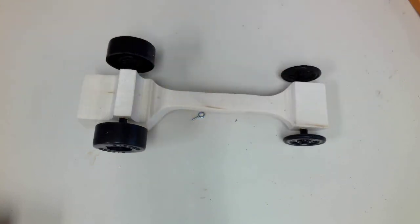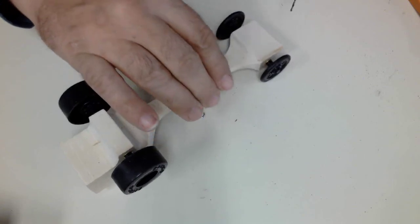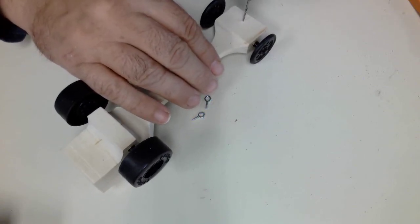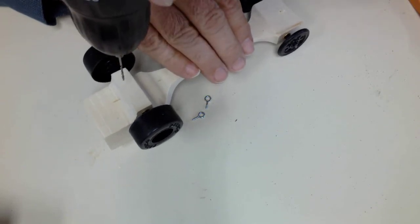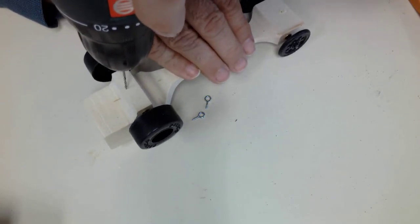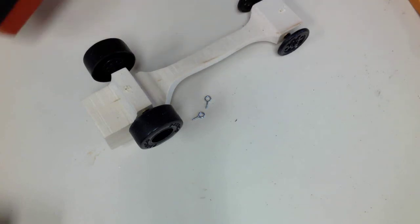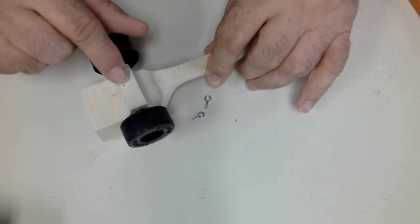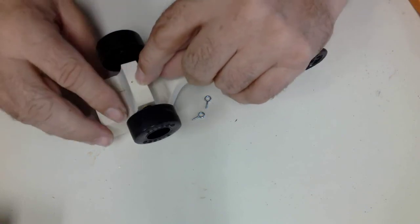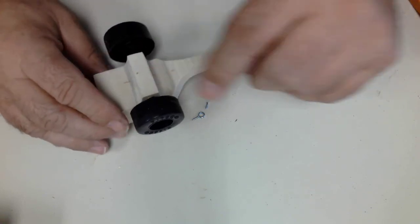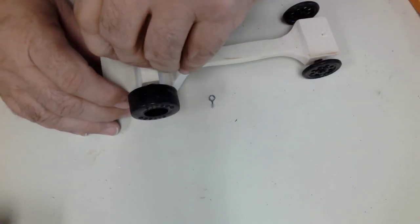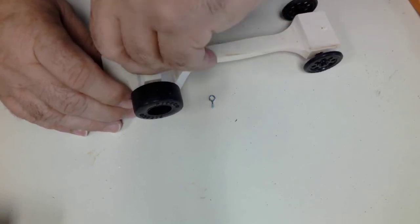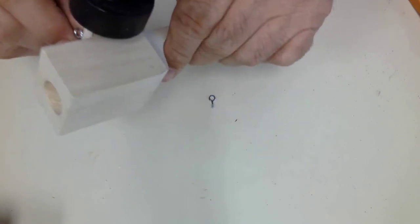So I drill a small hole in the center. If you'll notice where I drew it, when I drilled it in the back, it's not directly over the rear axle. Now I can screw my screw eyes in.